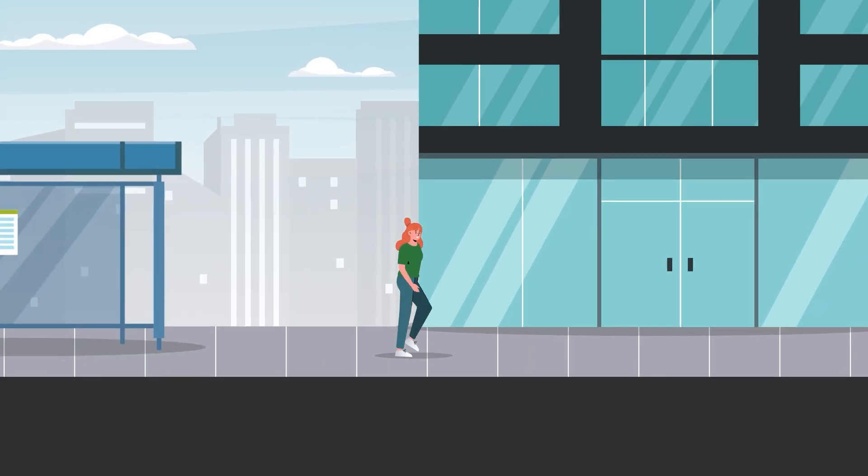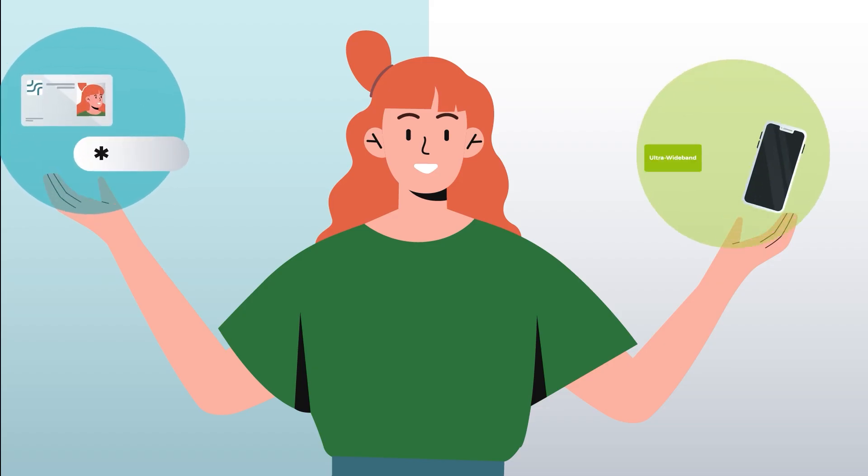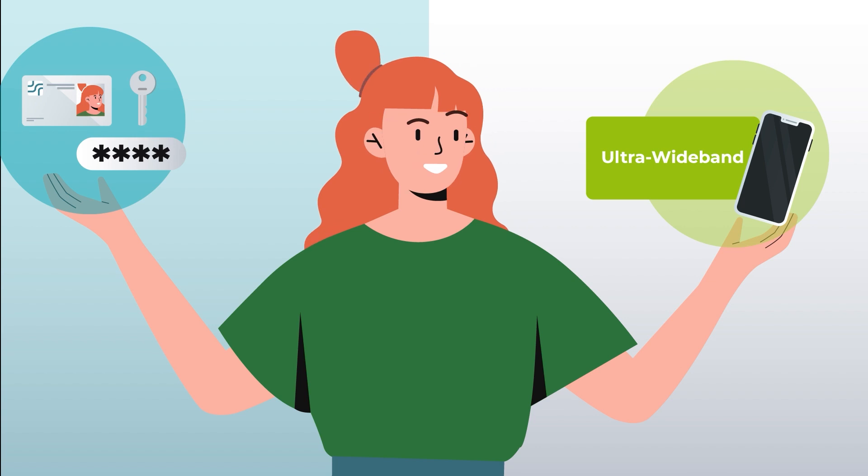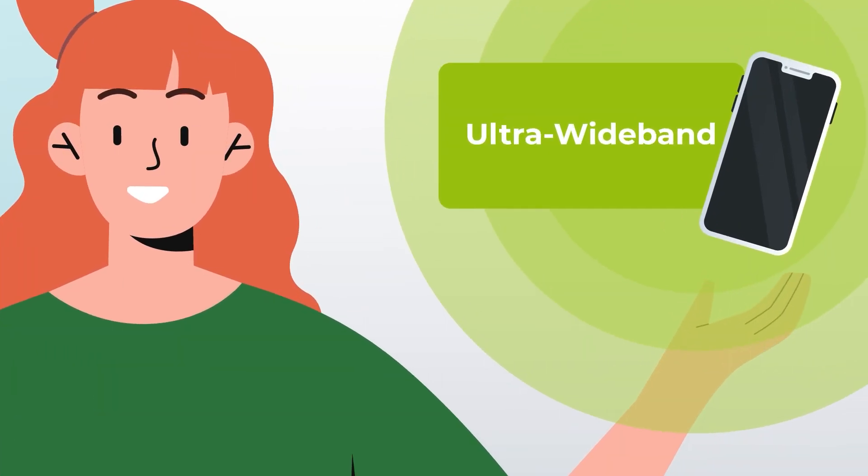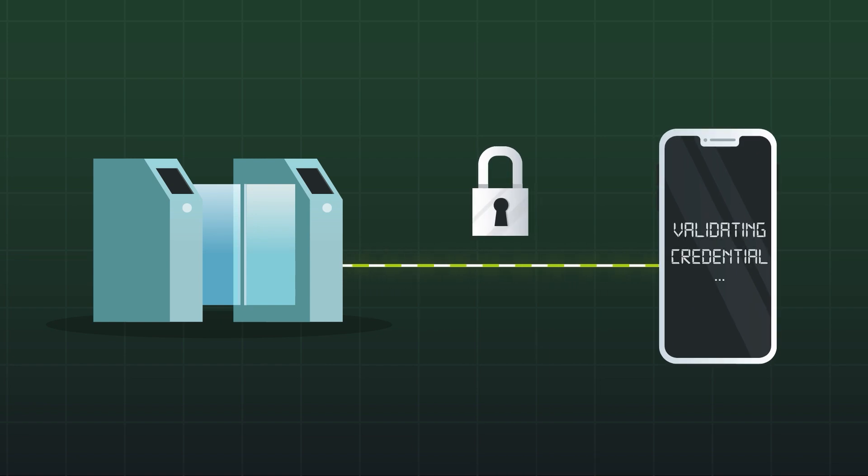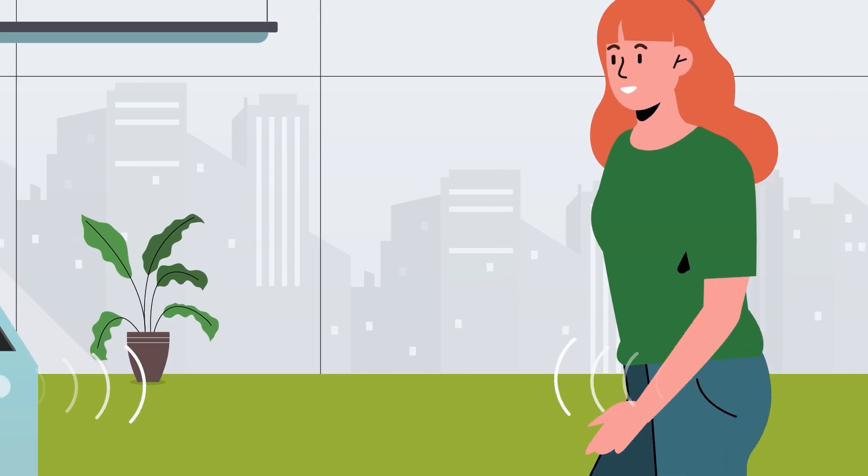When Jane arrives to her office, Jane can forget about pin codes or validation tokens to access the office premises. Thanks to Ultra Wideband technology, a secure Ultra Wideband channel is established between Jane's smartphone and the door lock. As soon as Jane is close enough to the door,